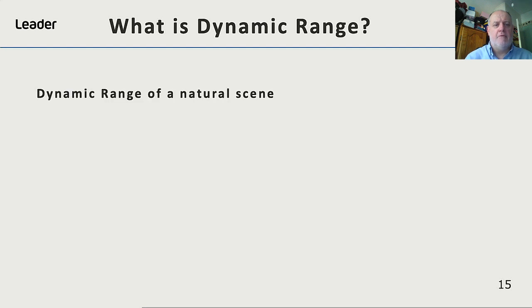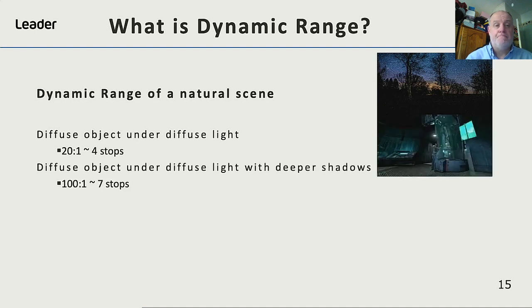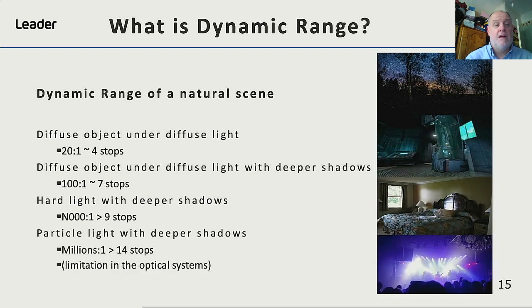Let's have a look at the dynamic range of natural scenes. A diffuse object under diffuse light is around four stops. A diffuse object under diffuse light with deeper shadows is around seven stops. A hard light with deeper shadows is around nine stops. And particular lights with deep shadows gets us into the range of 14 stops. Most modern digital film cameras can today exceed 14 stops of dynamic range on their capture.